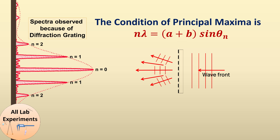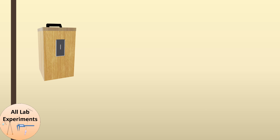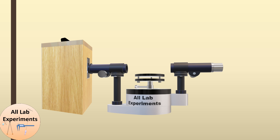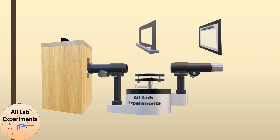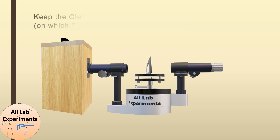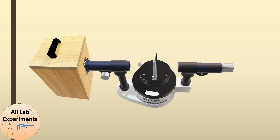To start the experiment, we take one sodium lamp and cover it using a box with a vertical orifice. We also take one spectrometer and place them such that the yellow sodium light coming out of the orifice goes directly to the collimator of the spectrometer. We then take one grating and a stand, attach the stand at the middle of the prism table, and place the diffraction grating in it. The grating should be oriented perpendicular to the light falling on it.